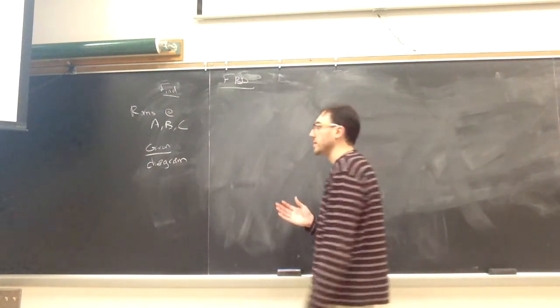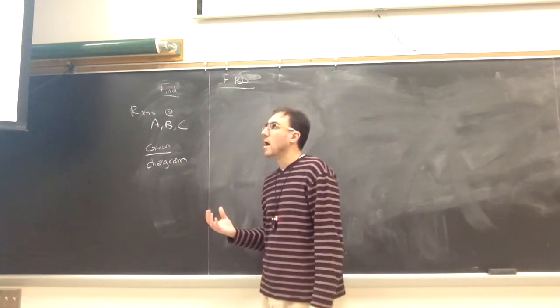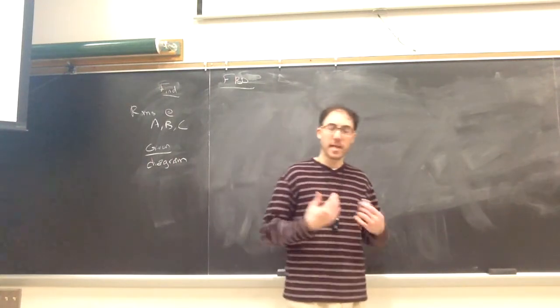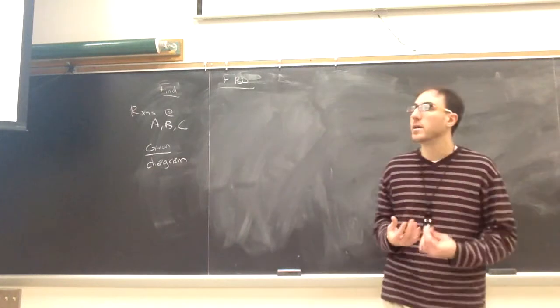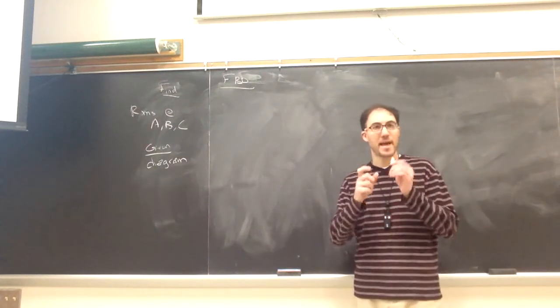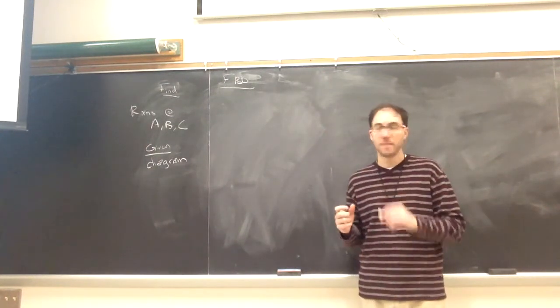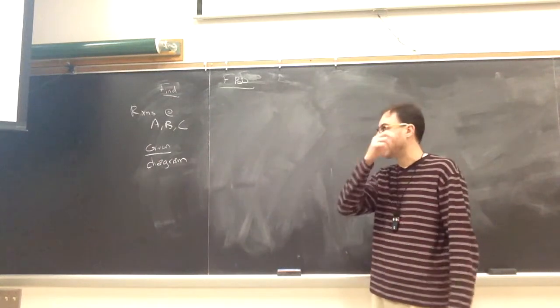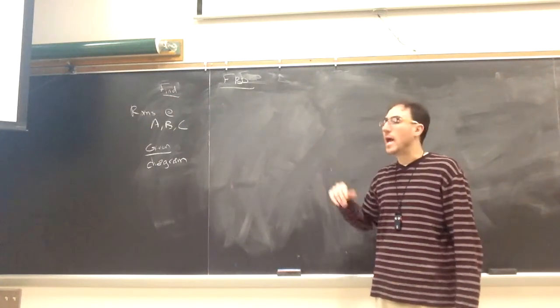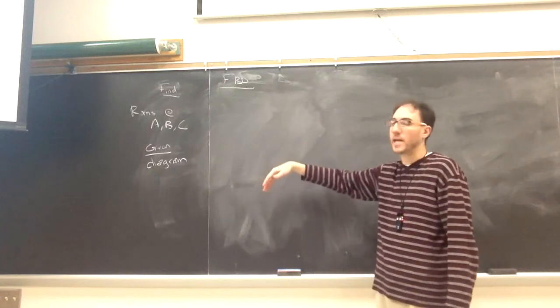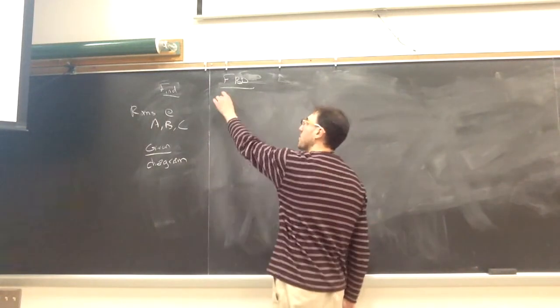The order I do it in doesn't really matter, but what I'm looking for, what's going to help me as I'm doing this by hand, is if I have a member that has only three unknowns attached to it, that means I'll be able to solve for those three unknowns right away. And when I'm doing it by hand, the sooner I can start to get numbers, usually it's going to make everything a little bit easier.